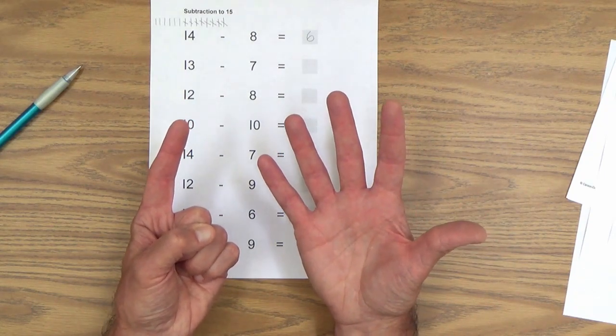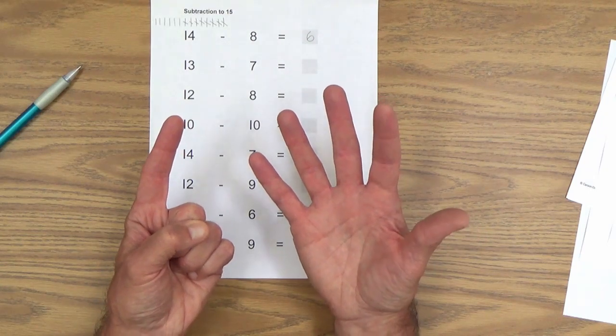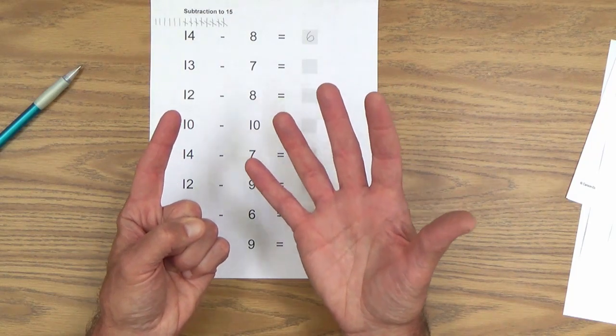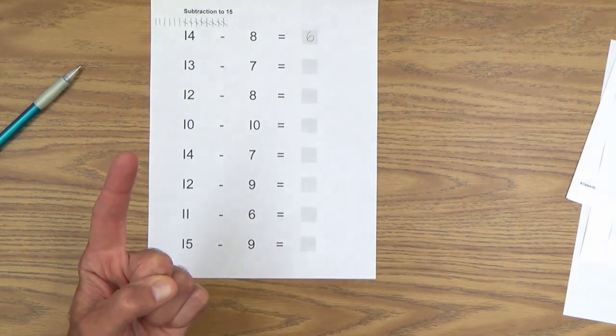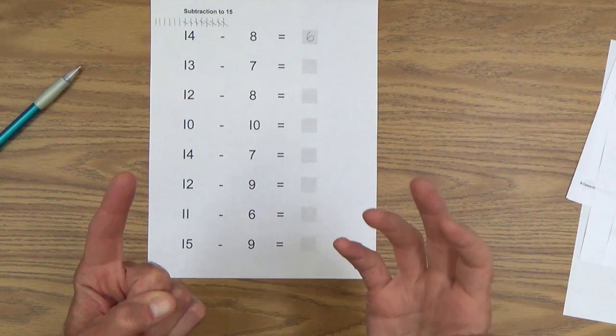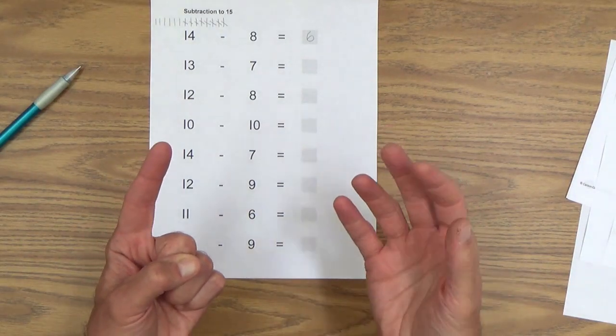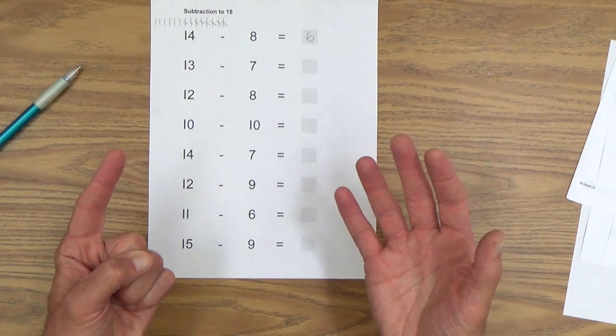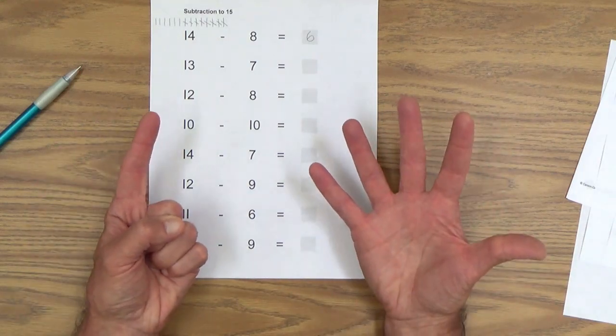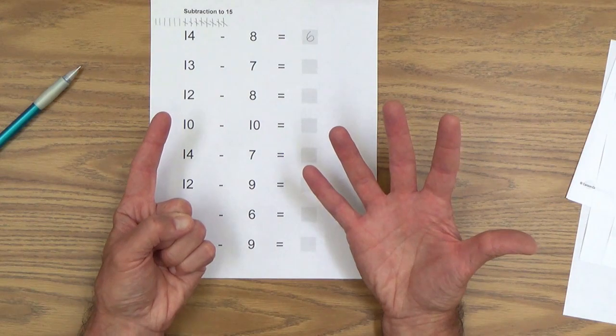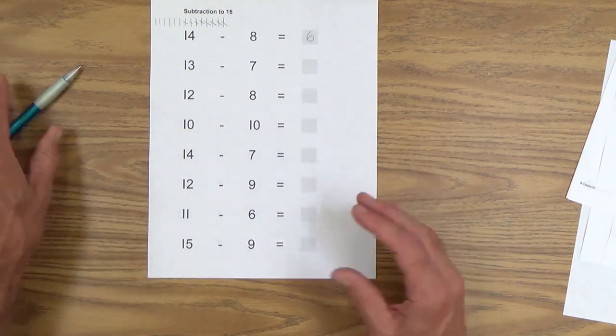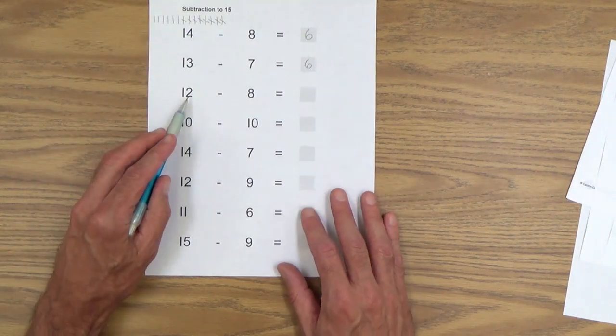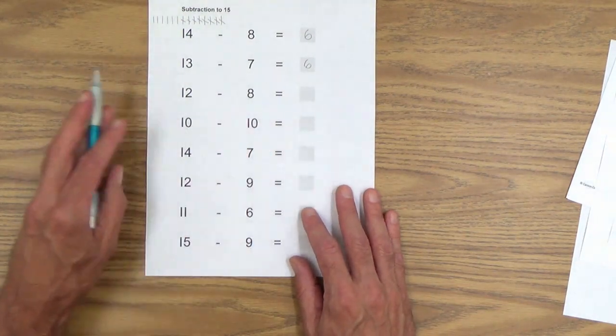Now your child has to count the number of fingers he or she has out. Some can do this just by looking. One of the things you may want to teach them, to count each finger individually, they can bring it up and tap them one at a time on their cheeks to count them all. Because they don't have an extra hand or an extra finger to do the counting. 13 minus 7 equals 6. Let's do one more.